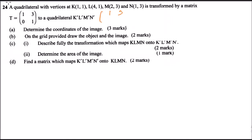The matrix T is [1,3;0,1]. For K we have (1,1), for L we have (4,1), for M we have (2,3), and for N we have (1,3). Multiplying the matrices: one times one is one, three times one is three, so one plus three gives four. Then one times four is four plus three gives seven. One times two is two plus nine gives eleven.